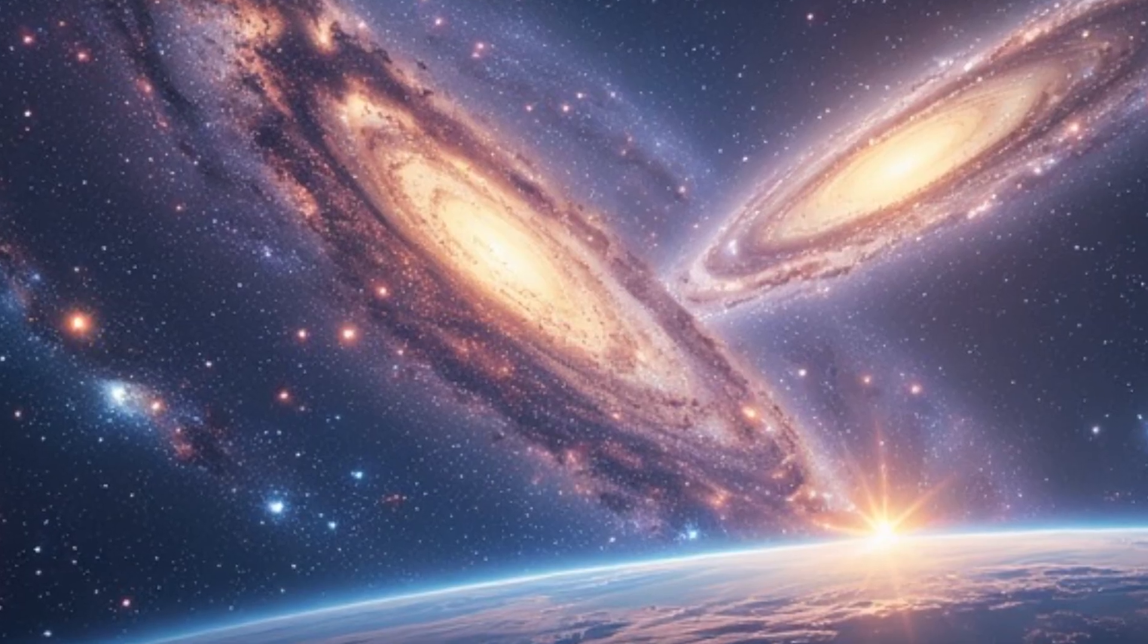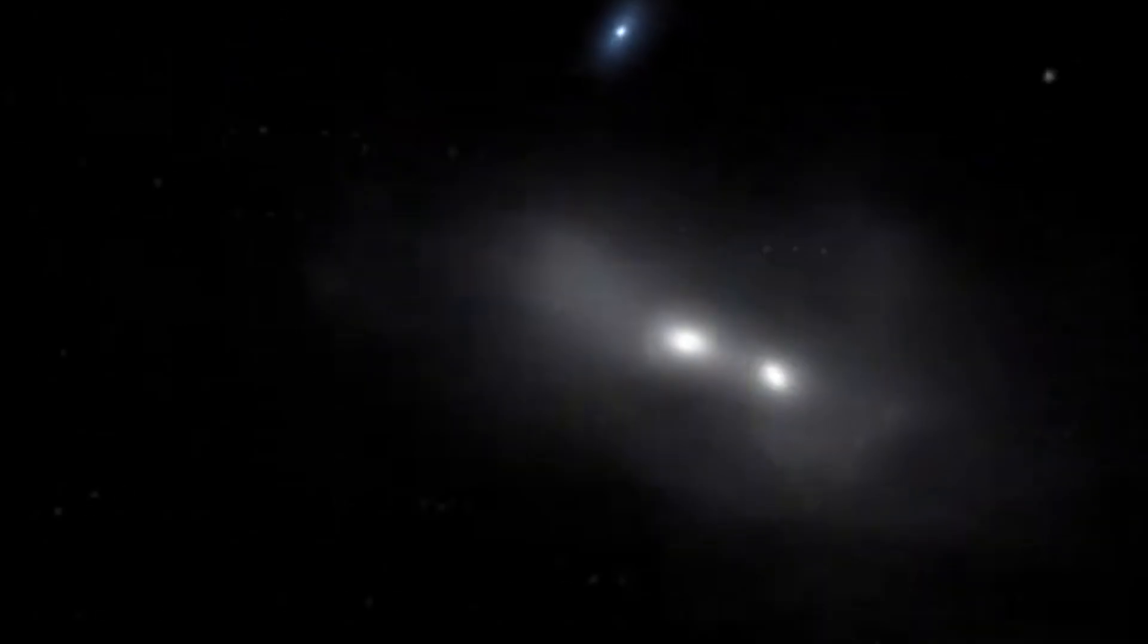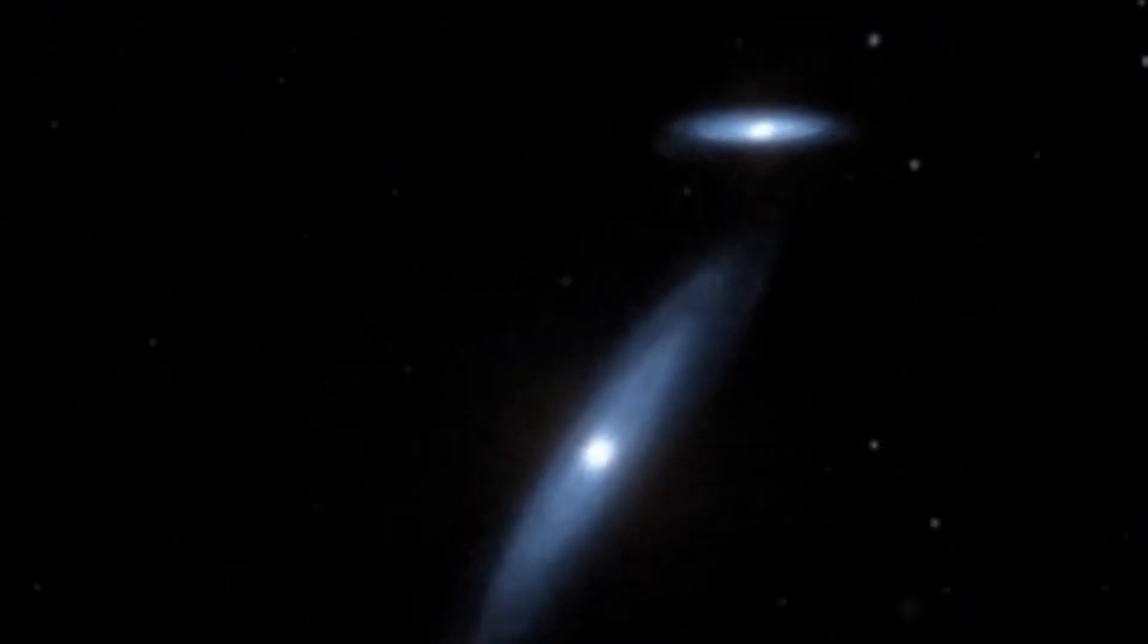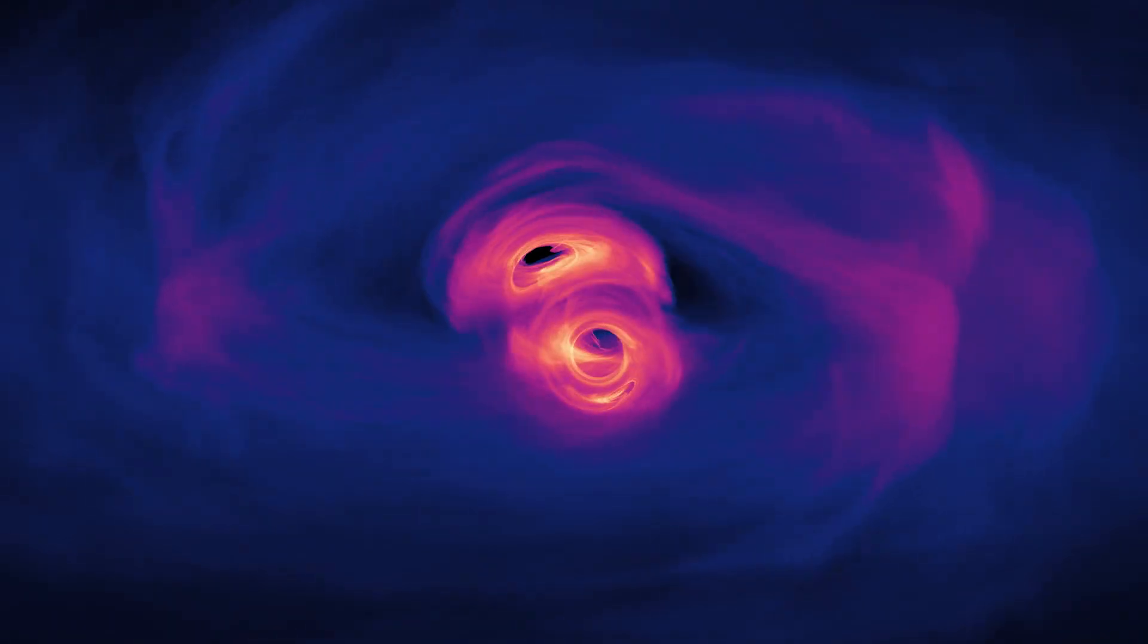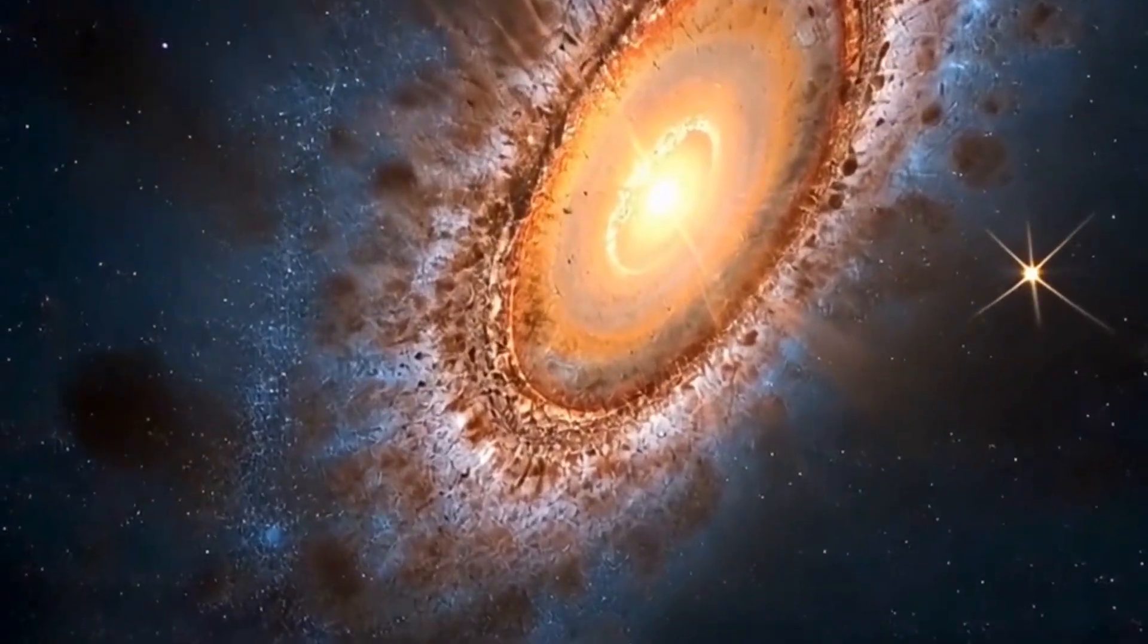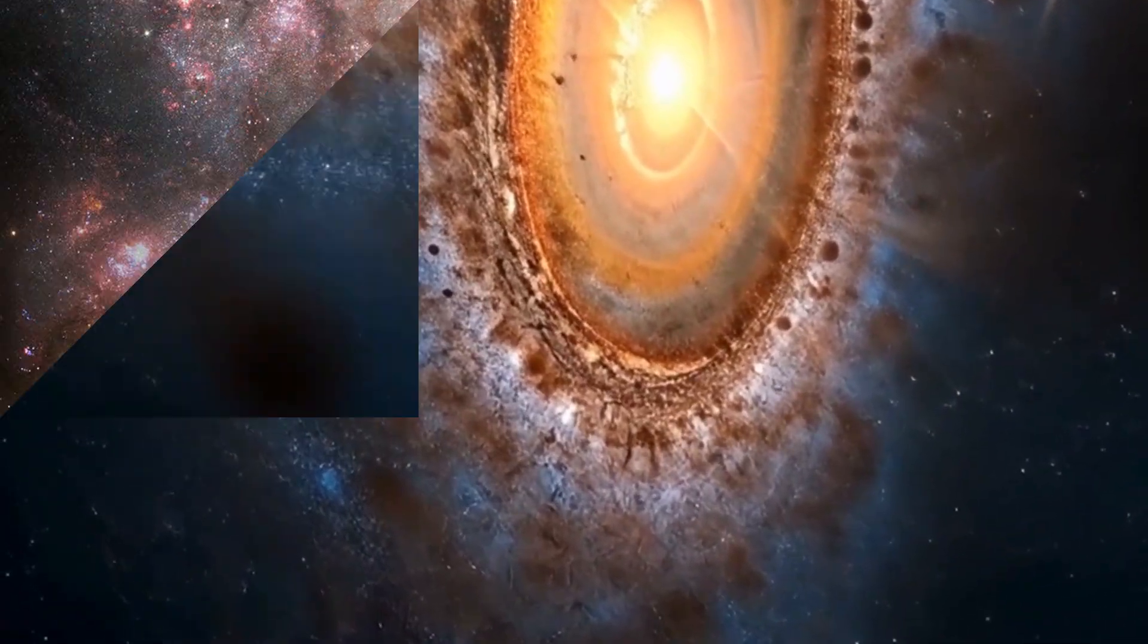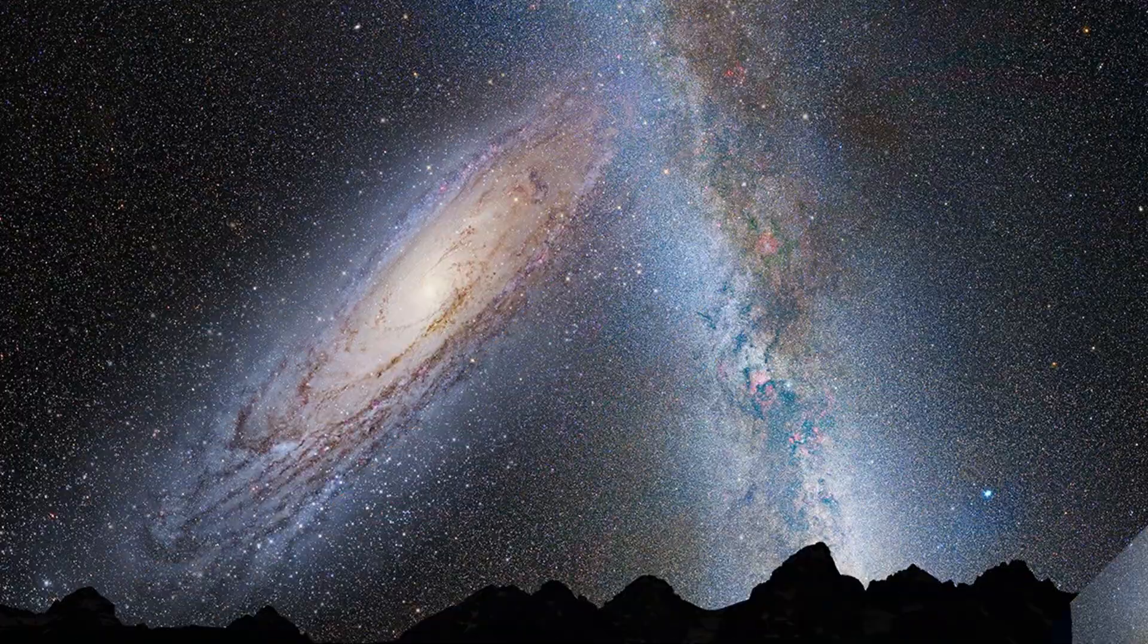What will happen? The galaxies will merge, not crash. Stars are too far apart to collide. Their gas and dust will trigger a starburst, creating new generations of stars. Their black holes will merge, forming a gigantic one at the centre. The final result? A new, massive, elliptical galaxy nicknamed Milkdromeda, or Milk-Omeda. The night sky during the collision will look spectacular, enormous glowing spirals filling the entire view.